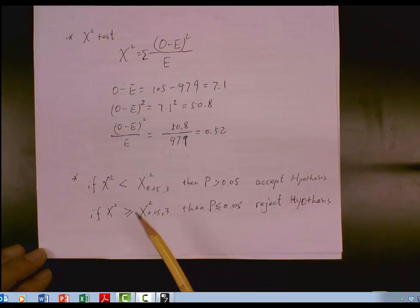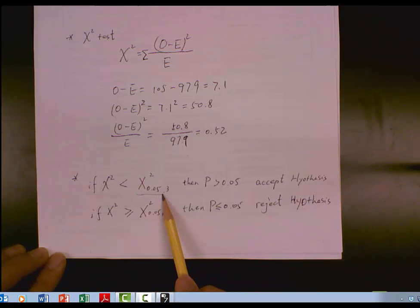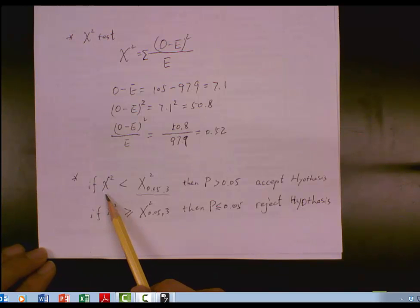So if a calculated value is smaller than the standard value, then this number p, p means the probability of fate will be greater than 0.05. We accept the hypothesis, means the data we collect fit 9:3:3:1 ratio of independent assortment. After you finish the calculation on page 1,